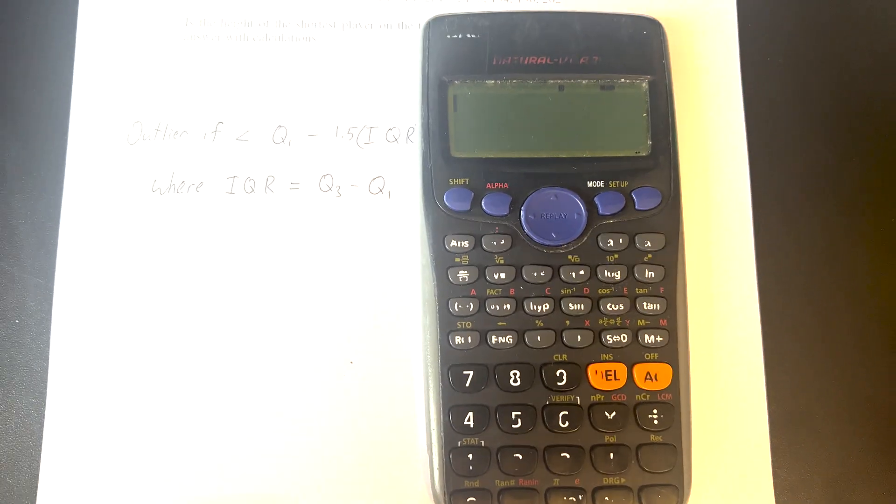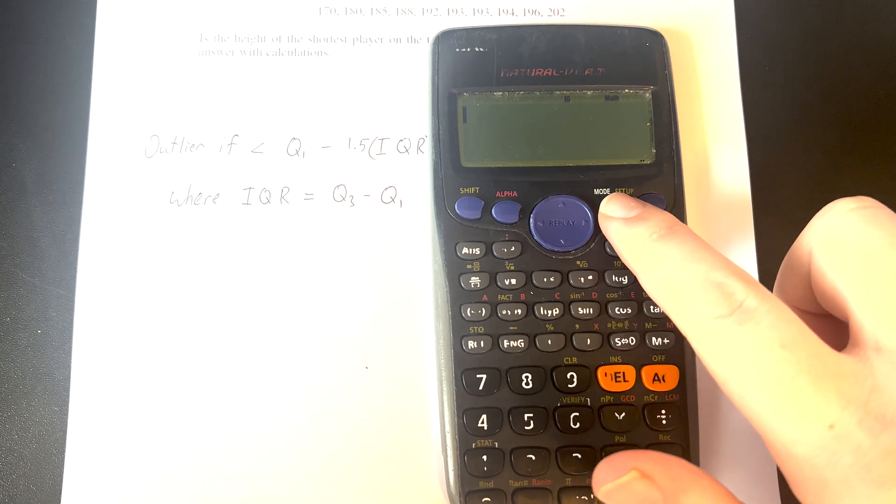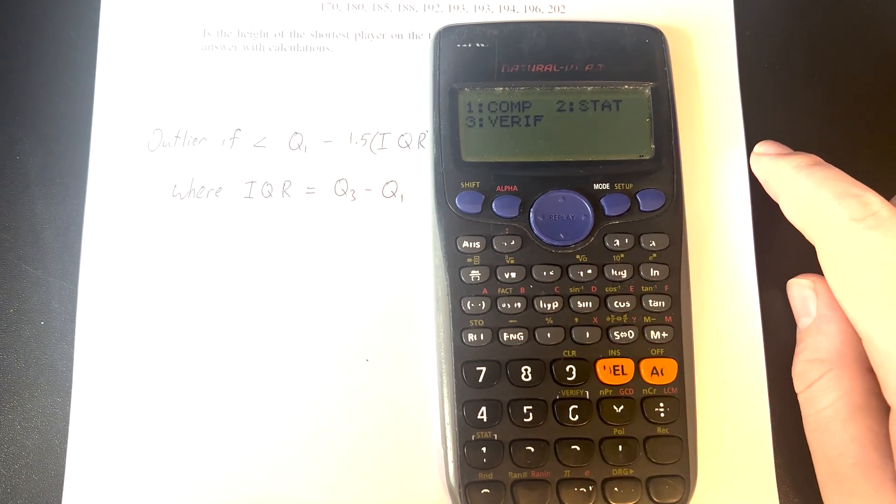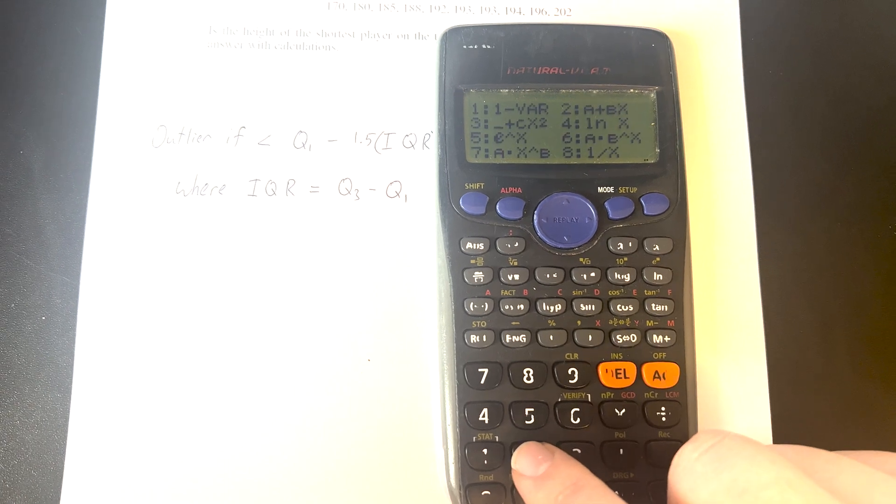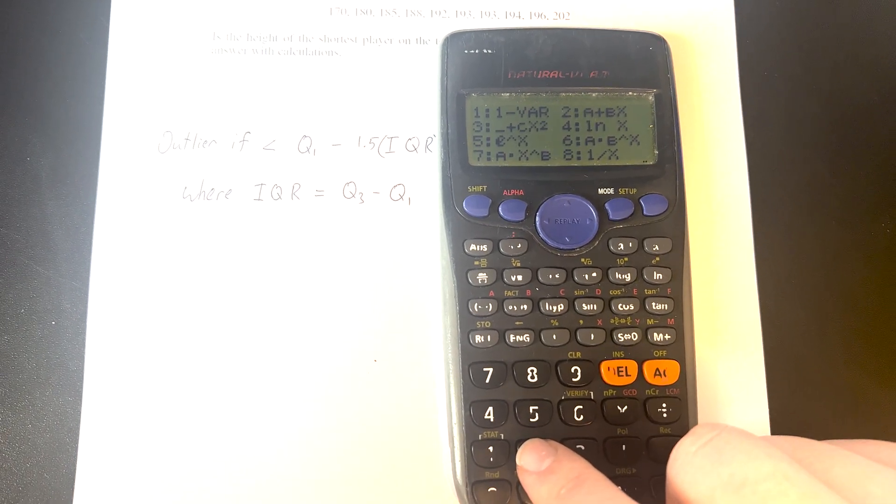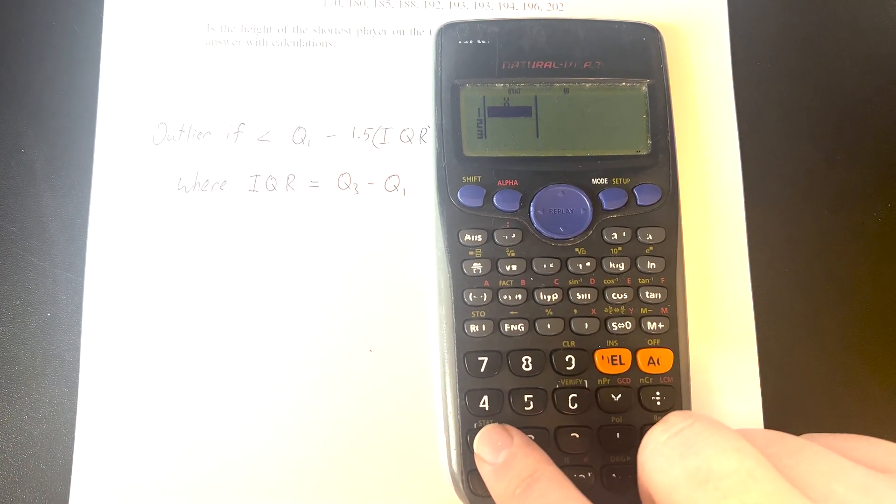The first thing we need to do is change the setup and mode for our calculator. We're going to press the mode button, press 2 for stats mode. We've got a few different options here, so we'll press option 1 for single variable.